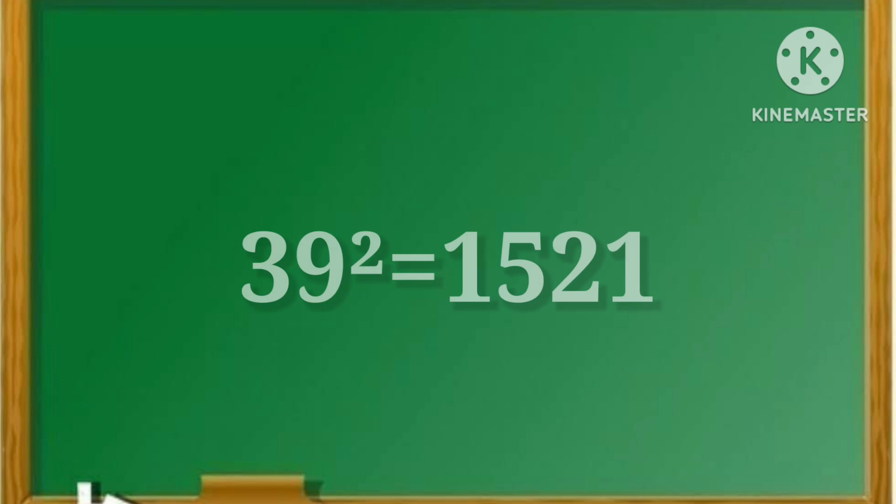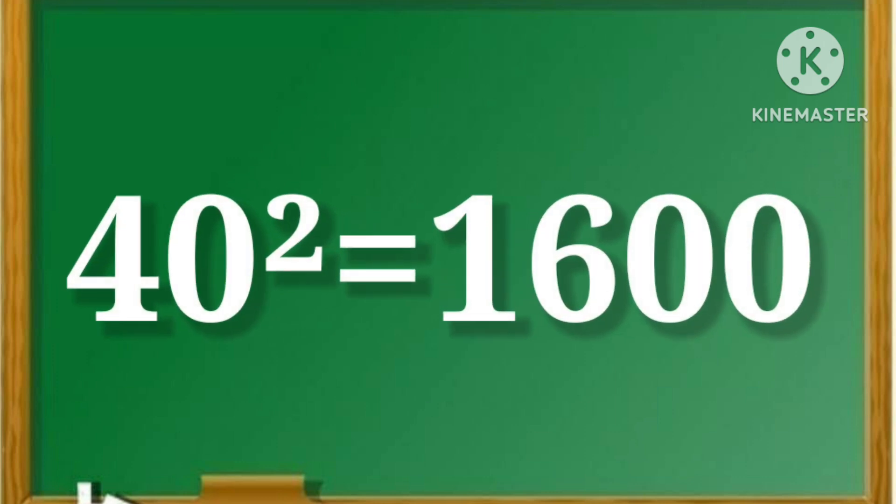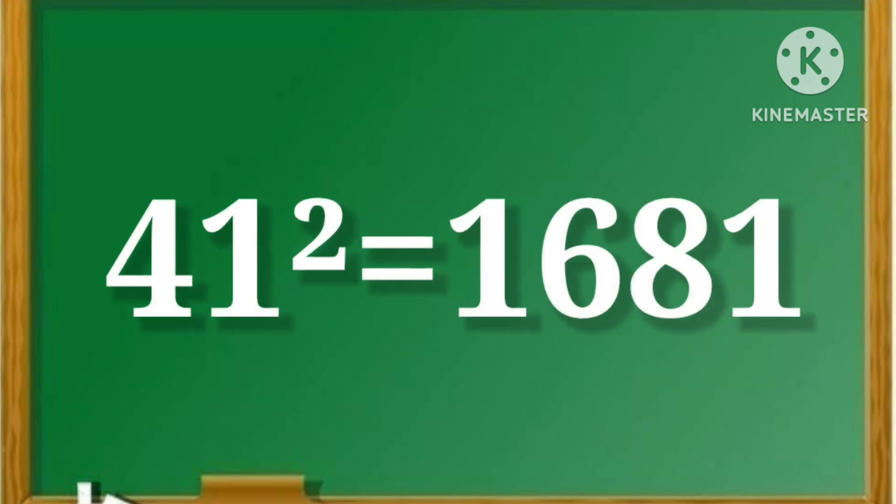39 square is equal to 1521. 40 square is equal to 1600. 41 square is equal to 1681.